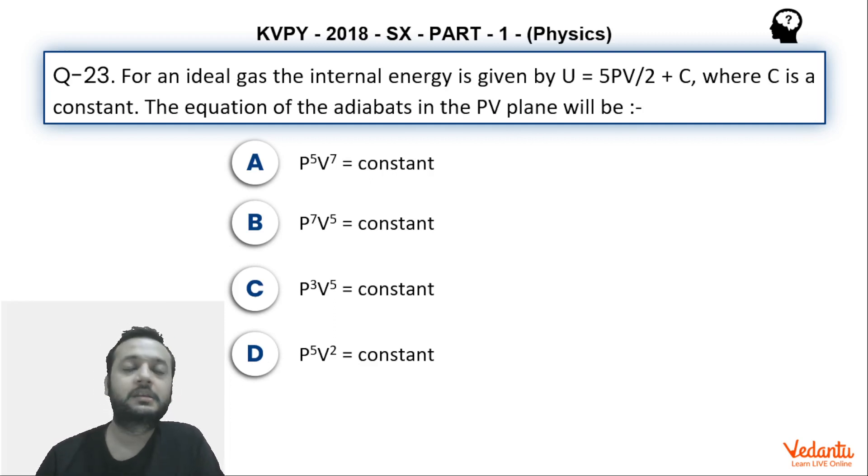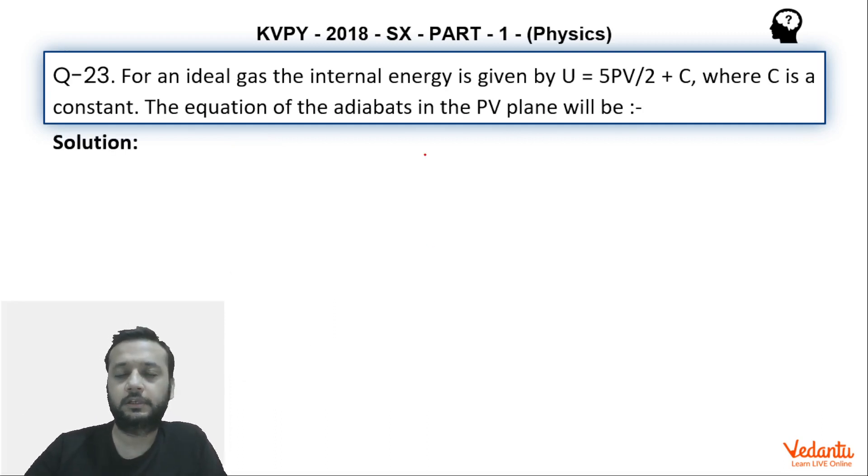A fairly simple question, now procedural one we will get the answer right now. So what is first law of thermodynamics? First law of thermodynamics says that dQ in any process, dQ is equals to dU plus dW, correct.